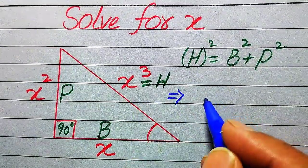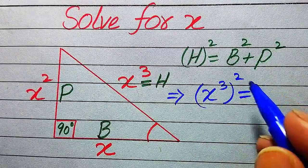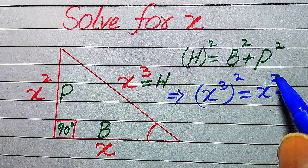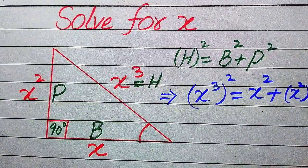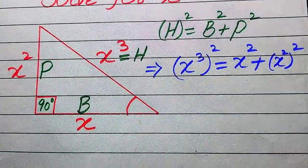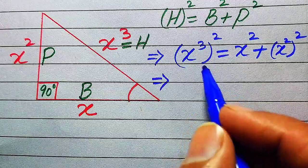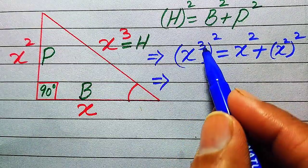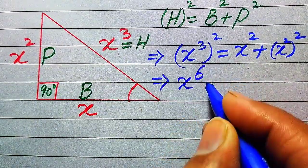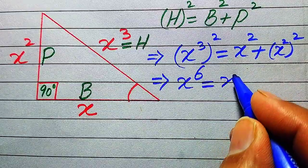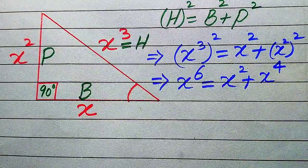Our hypotenuse is x³, so we get (x³)² = (x²)² + (x)². Using the exponential law, we multiply the exponents: x⁶ = x⁴ + x².